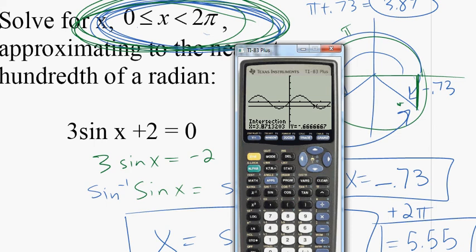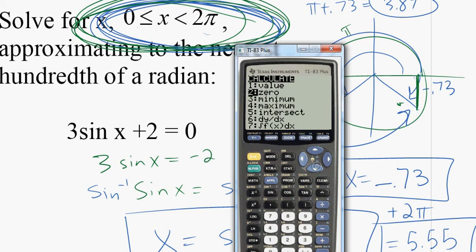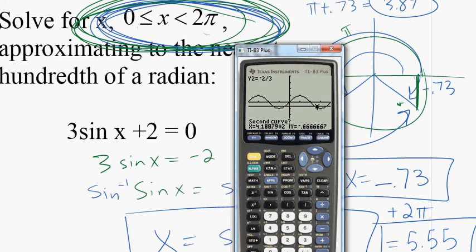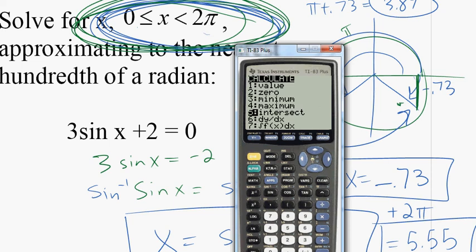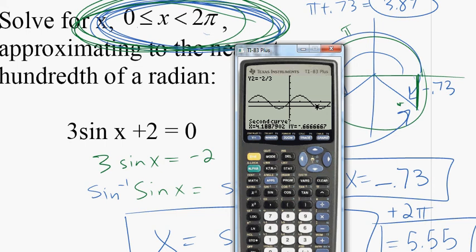Then we're going to do the same thing. Second, calculate, intersect. First curve, second curve. Oops. Wrong button. Intersect. First curve, second curve. I'm going to scroll over to make the guess more accurate. And we get 5.553 whatever. Should we be surprised by that answer? No. Because that's what we got for that. Right.